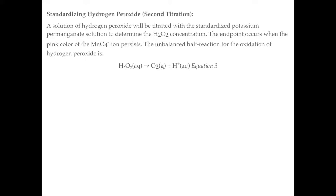The second titration we're going to do is standardizing the hydrogen peroxide to determine its concentration, which is the goal of this lab. A solution of hydrogen peroxide will be titrated with a standard potassium permanganate solution. The end point occurs when the pink color of the permanganate ion persists. The unbalanced half-reaction is shown below.